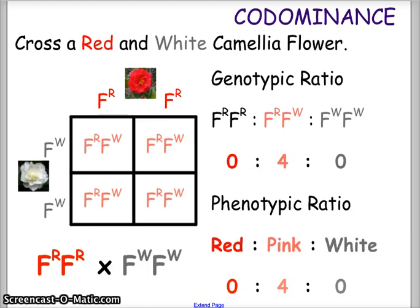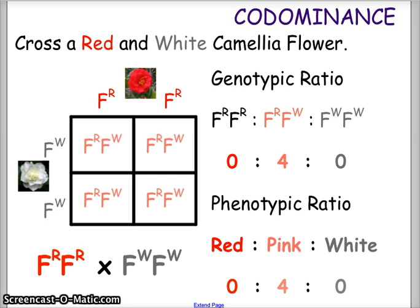Just as with standard Mendelian genetics, we have a genotypic ratio and a phenotypic ratio. The two homozygous dominant traits appear on the left and right, and the heterozygous combination is in the middle. Our genotypic ratio is F^R F^R : F^R F^W : F^W F^W = 0 to 4 to 0. For the phenotypic ratio, red to pink to white also comes out 0 to 4 to 0.